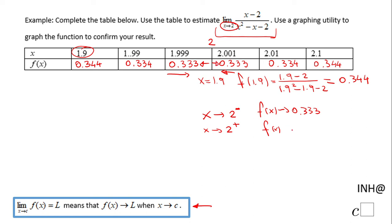So this is what the limit is for this function. The limit when x approaches 2 of f(x), f(x) being this rational function, is 0.333. Let's take a look at the last thing: a graph.